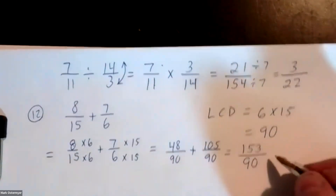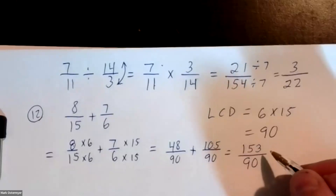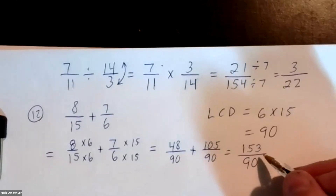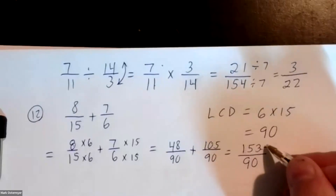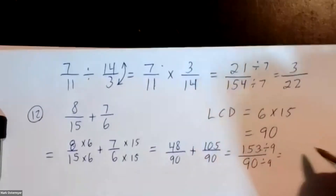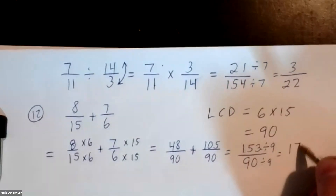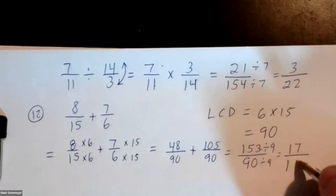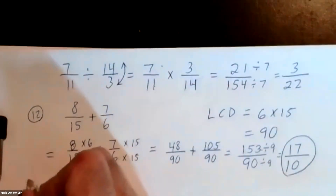Can we reduce one fifty-three over ninety? The divisibility test: one plus five plus three equals nine, so nine divides into one fifty-three. Nine divides into ninety also. Nine divides into one fifty-three seventeen times, and nine divides into ninety ten times. That's your answer: seventeen tenths.